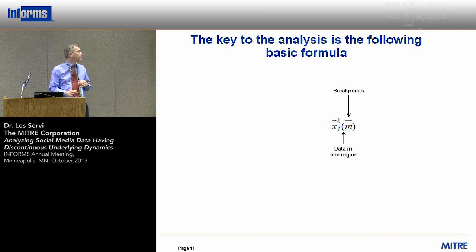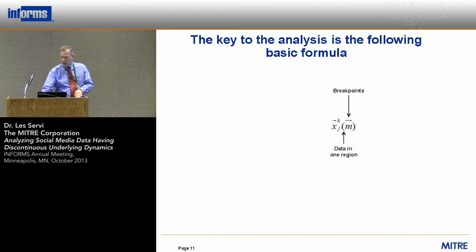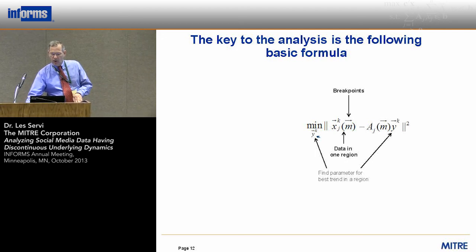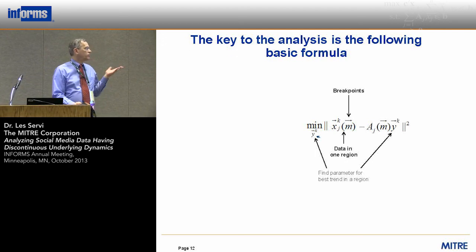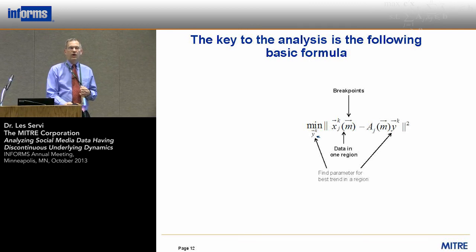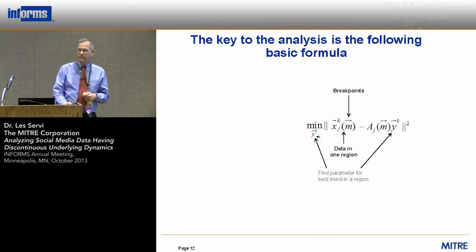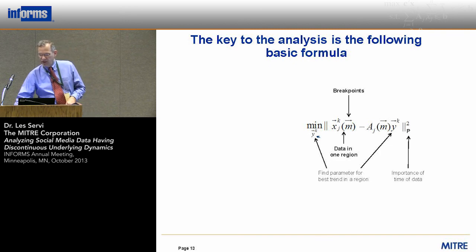Suppose we know when all the breakpoints are. Let x be the data corresponding to the j-th emotion and the k-th region of continuity, and m are the breakpoints assumed to be known. Within a breakpoint region, this is a very simple problem — you can use linear regression to find the velocity. If you think a constant velocity is a good model, you construct the matrix to find that velocity. Maybe you prefer a constant model, or maybe more sophisticated models. I think a linear model is good, but this framework can handle more sophisticated methods.